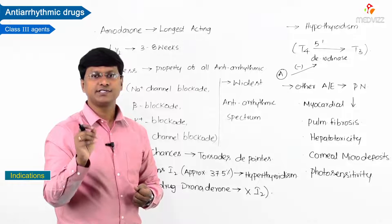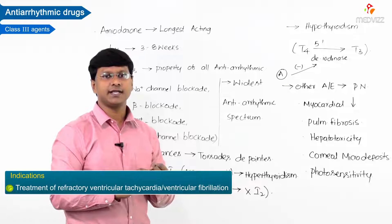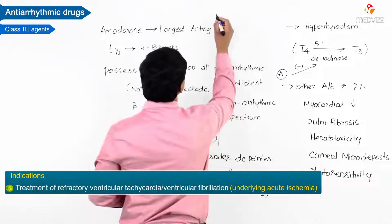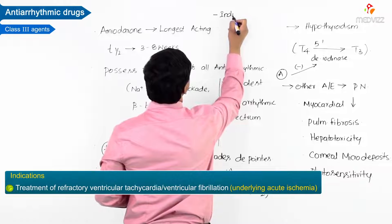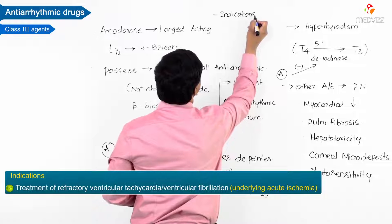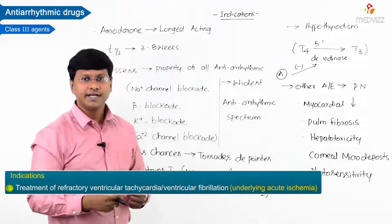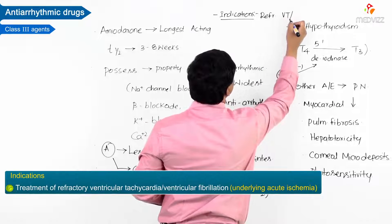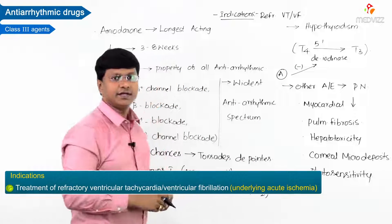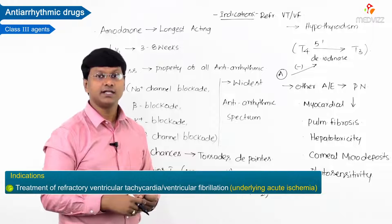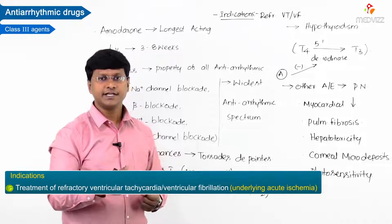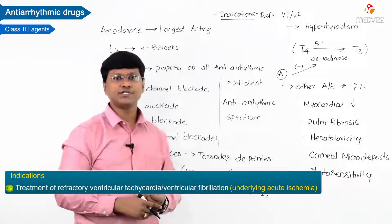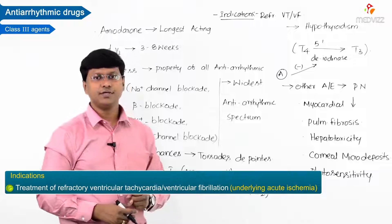Regarding the indications of amiodarone: it is indicated for the treatment of refractory ventricular tachycardia (VT) or ventricular fibrillation (VF), particularly in the setting of acute ischemia such as myocardial infarction, where there is a chance of developing VT or VF.